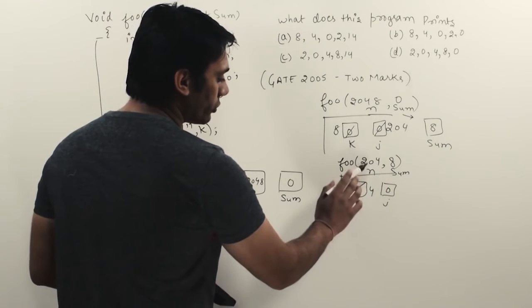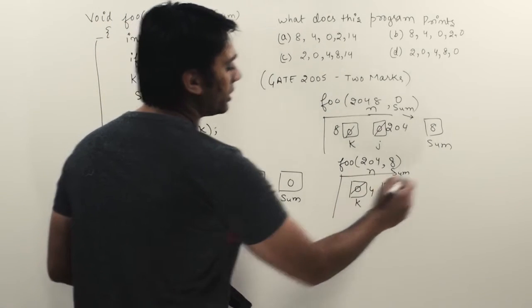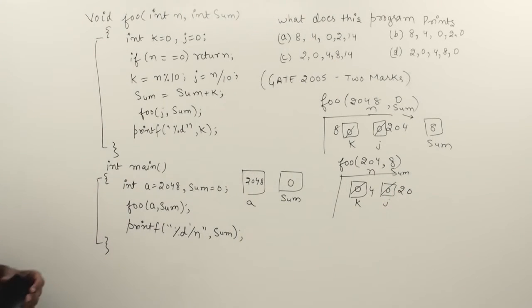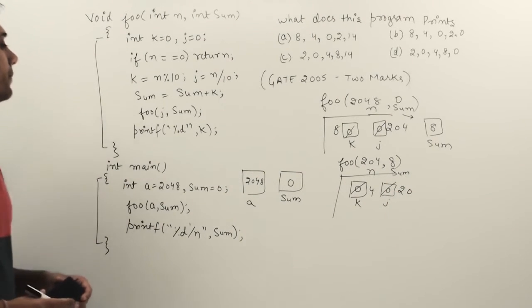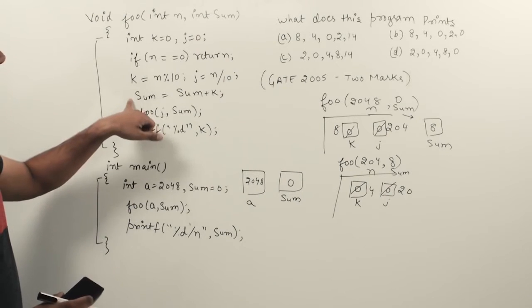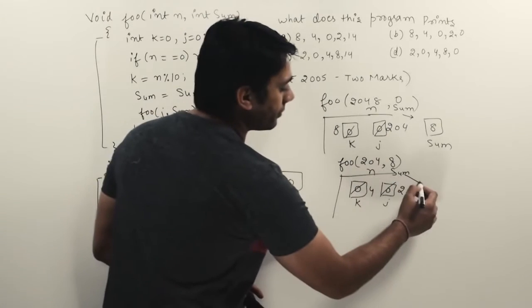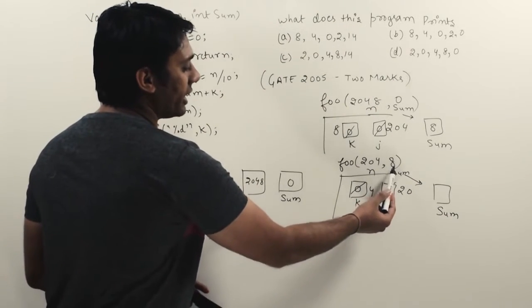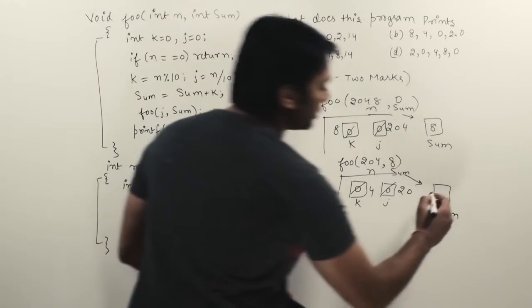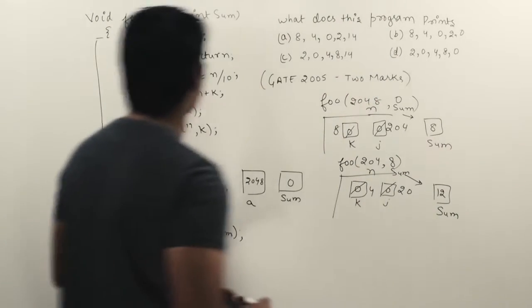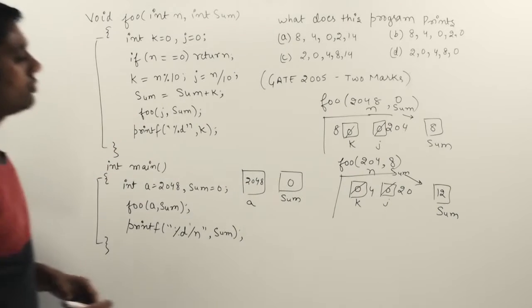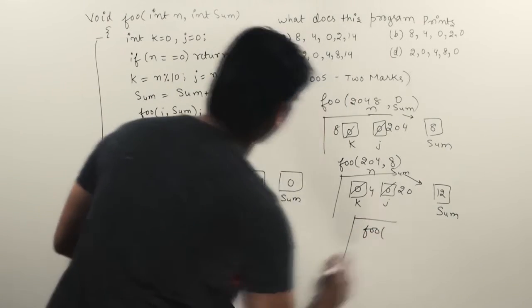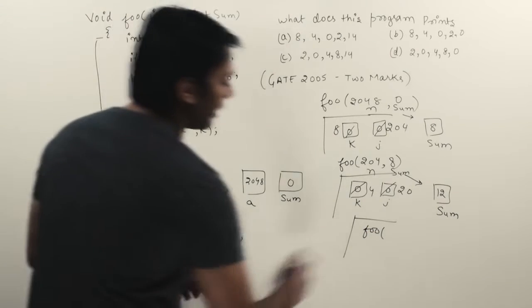Since j is an integer variable, it stores 20 (discarding the decimal part). Then sum = sum + k, so sum = 8 + 4 = 12. We then call foo(20, 12).